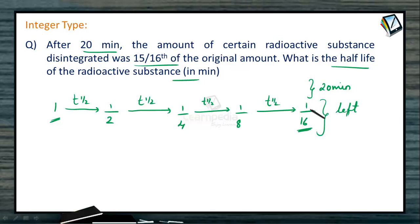Then why I stopped here after one by sixteenth? Because it is given that the amount disintegrated was 15 by 16th of the original amount, means 1 minus 1 by 16th is equal to 15 by 16th. So this much amount of the original substance disintegrated. So definitely this much amount will be left over.